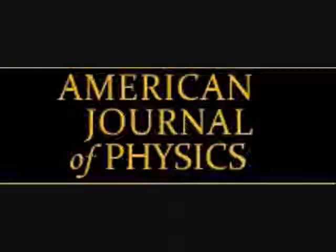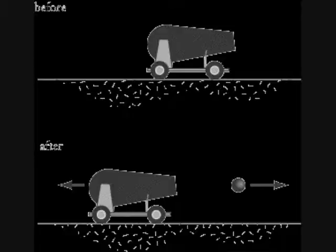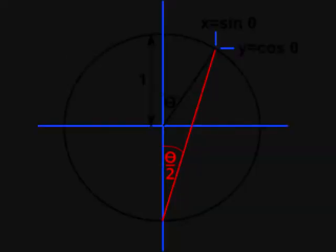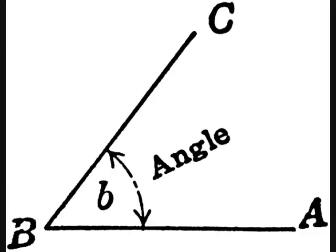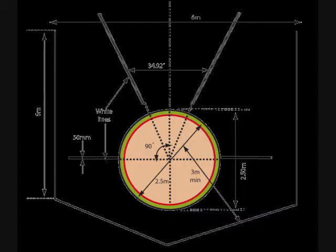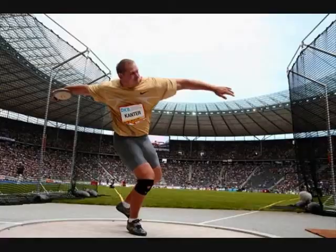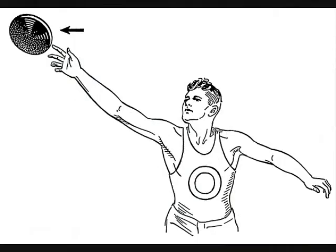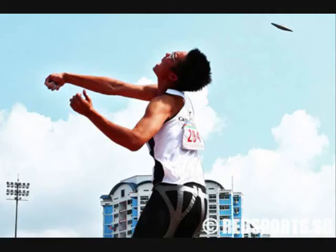According to studies cited in the American Journal of Physics, lift and drag all interact during the flight of the discus in such a way that they change the ideal angle of release. The ideal range is from 45 to 30 degrees. The conclusion was that a discus thrown at a lower angle produces an angle of attack that produces the best lift and greater chance for distance.